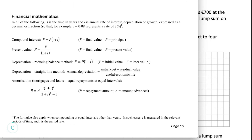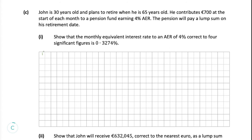Going to the financial maths section of the log tables, we use the compound interest formula F = P(1 + i)^t. Since we have 4% AER, F is 104 and P is 100, so: 104 = 100(1 + i)^12 for 12 months. Dividing across by 100 gives 1.04 = (1 + i)^12, so we need to find the 12th root of 1.04.